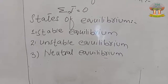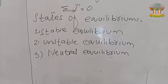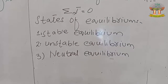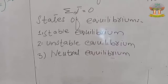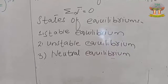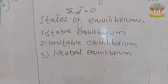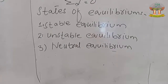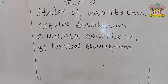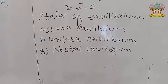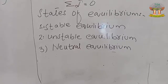The next topic is neutral equilibrium. When the center of gravity of a body lies at the point of suspension or support, the body is said to be in neutral equilibrium. Examples include a car tire and a rolling ball. In neutral equilibrium, the center of gravity does not change. For example, when a car moves, the center of gravity of the tire remains unchanged — it stays stable. This is neutral equilibrium.